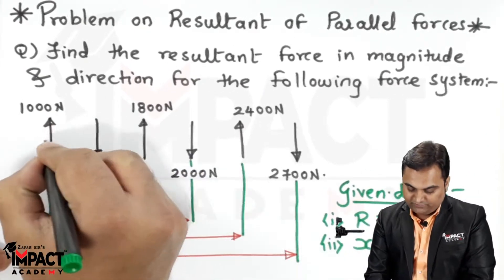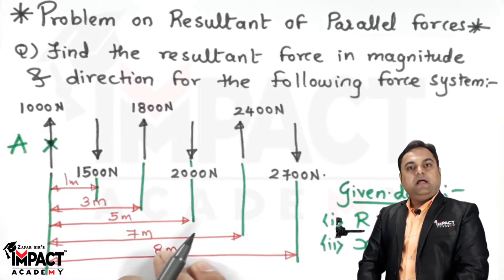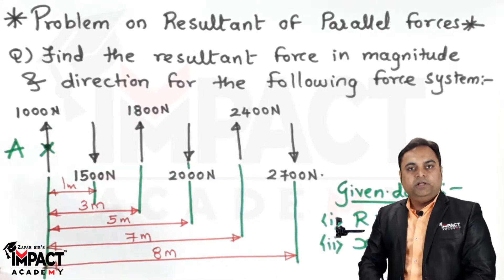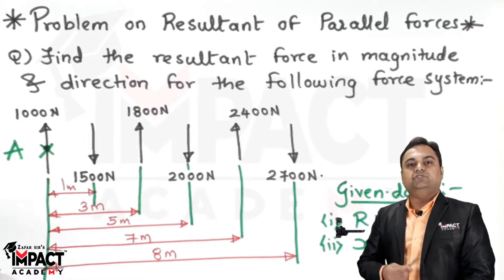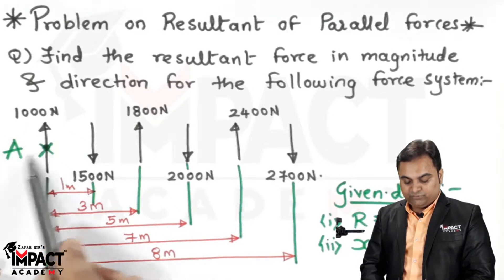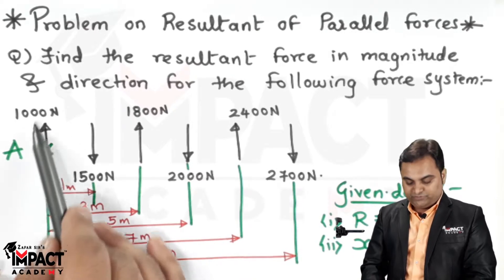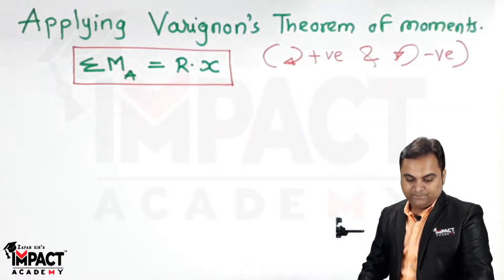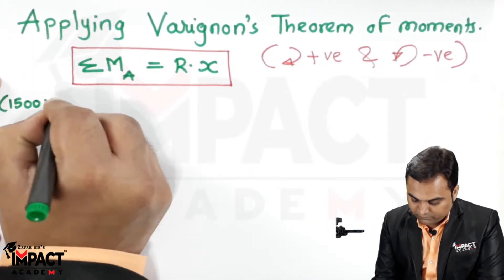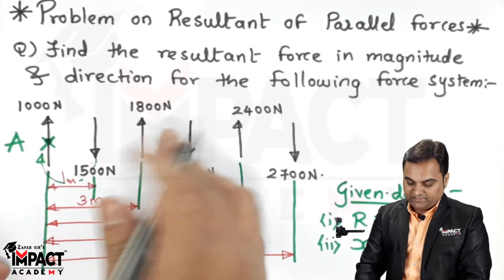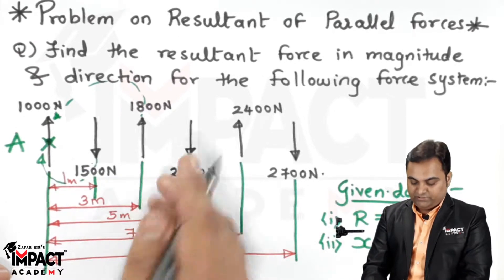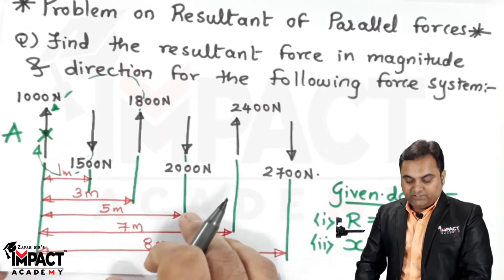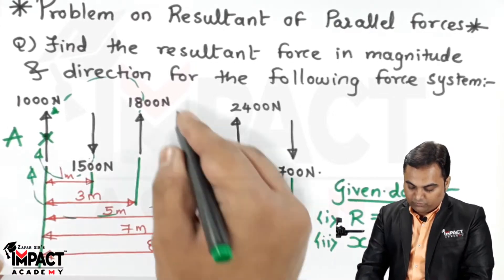I am taking the first force as the reference point, that is point A. Taking moments of all forces about point A: 1000 Newton passes through point A so its moment is zero. 1500 Newton acts downward, producing a clockwise moment, so +1500 × 1. 1800 Newton acts upward, producing an anti-clockwise moment at 3 meters, so −1800 × 3. 2000 Newton acts downward, clockwise, so +2000 × 5.